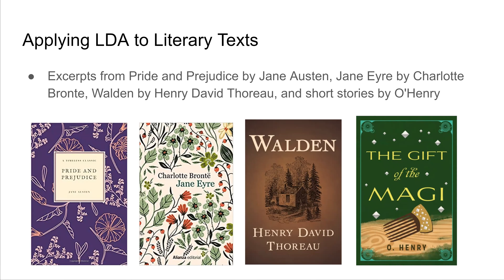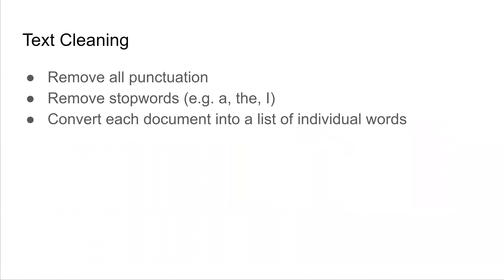Now that we have given background on LDA and discussed the inference methods — Gibbs sampling and variational inference — we are ready to use our methods on some literary texts. The texts are excerpts from Pride and Prejudice by Jane Austen, Jane Eyre by Charlotte Bronte, Walden by Henry David Thoreau, and short stories by O. Henry. Before analyzing these texts, we have to clean them by removing stop words such as 'I' or 'the', removing all punctuation, and converting the texts into lists of words.